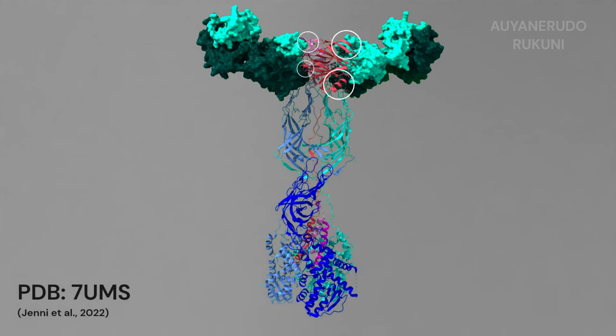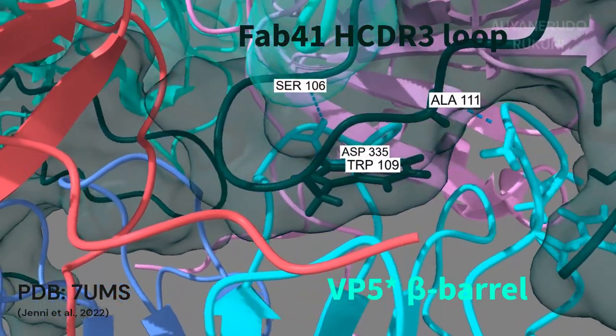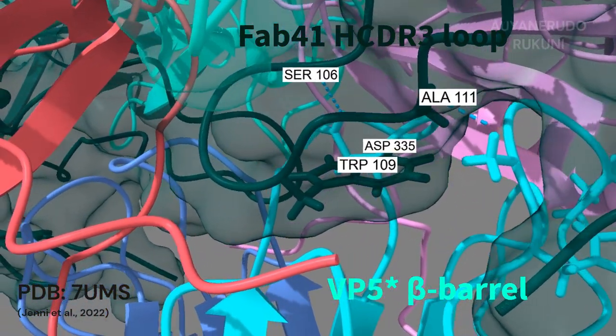The FAB41 heavy-chain complementarity determining region 3 inserts into the cleft and binds the VP5 beta-barrel and one VP8 domain, making both polar and non-polar contacts.